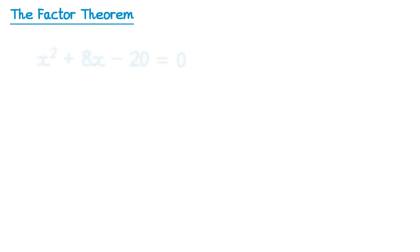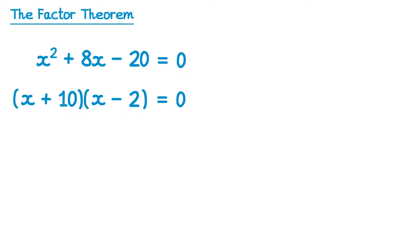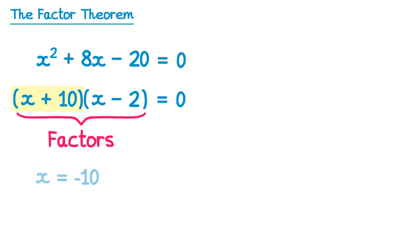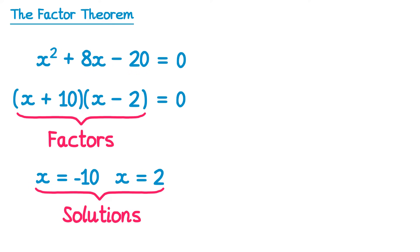Let's start with a quadratic equation. In order to solve this most people would probably factorise. These two brackets are known as factors since they multiply to give you the quadratic. If we look at the first bracket x plus 10, if that equals zero then we get x equals negative 10. And the second bracket x minus 2 equals zero gives us x equals 2. These are both known as solutions.